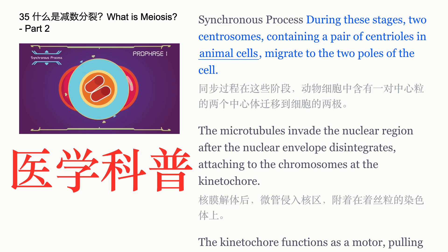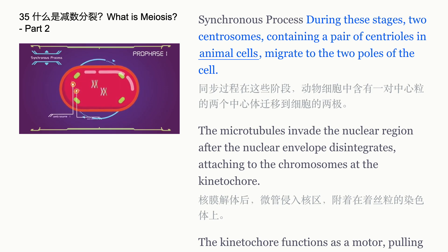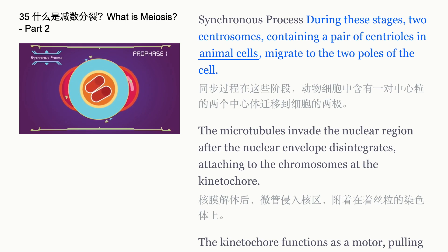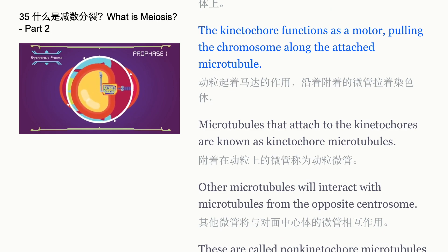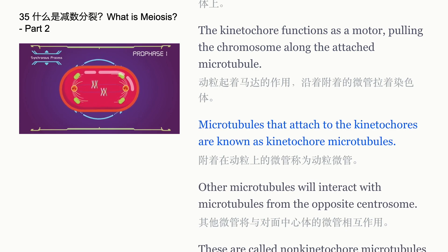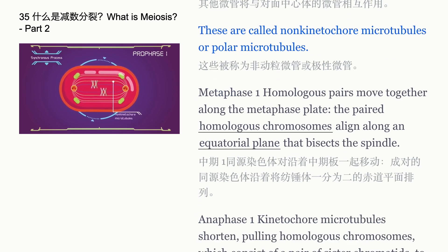During these stages, two centrosomes containing a pair of centrioles in animal cells migrate to the two poles of the cell. The microtubules invade the nuclear region after the nuclear envelope disintegrates, attaching to the chromosomes at the kinetochore. The kinetochore functions as a motor, pulling the chromosomes along the attached microtubule. Microtubules attached to the kinetochores are known as kinetochore microtubules. Other microtubules interact with microtubules from the opposite centrosome; these are called non-kinetochore microtubules, or polar microtubules.